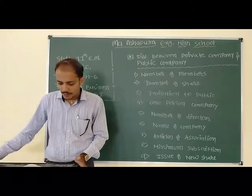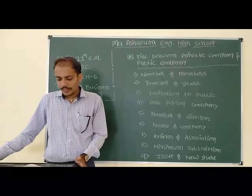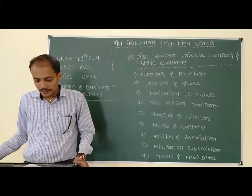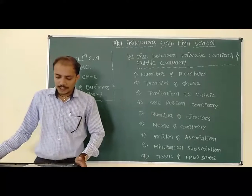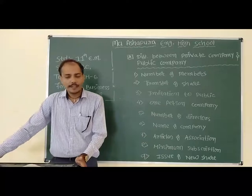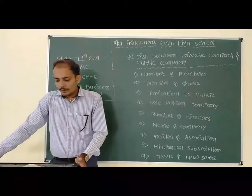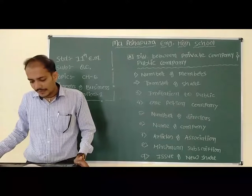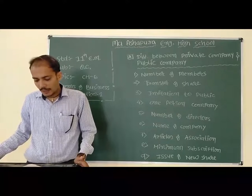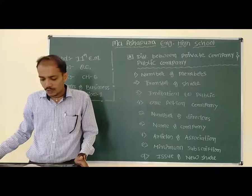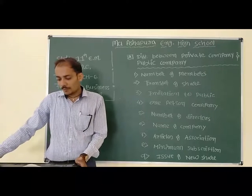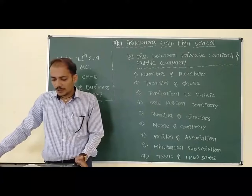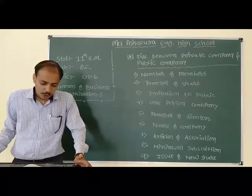Point number 7: articles of association. For a private company, articles of association are to be prepared and registered compulsorily with the Registrar of Companies. This mein article of association prepare karna compulsory hota hai. Public company mein model articles — Table F — are applicable automatically if articles are not prepared.